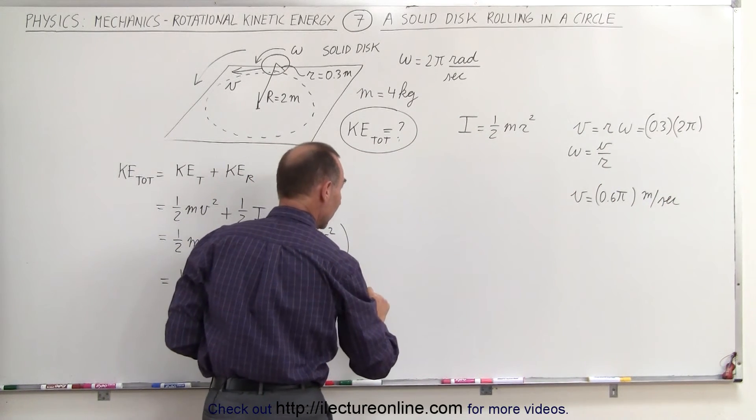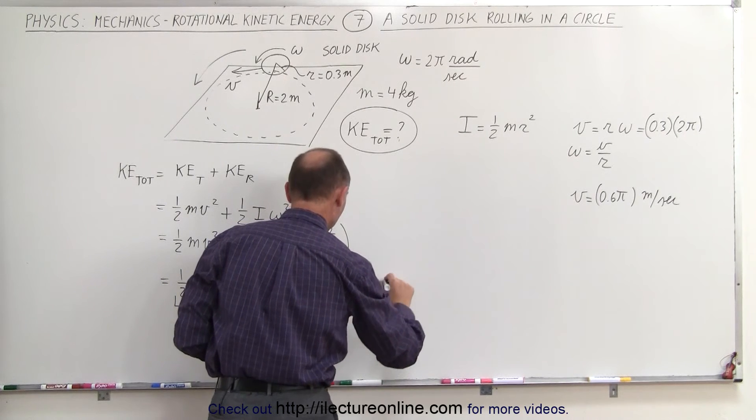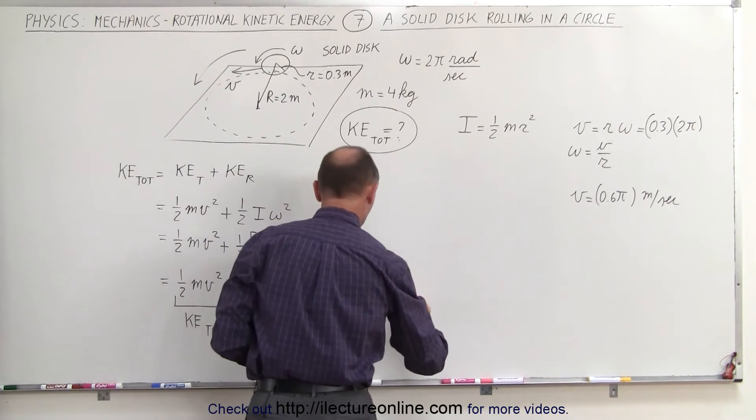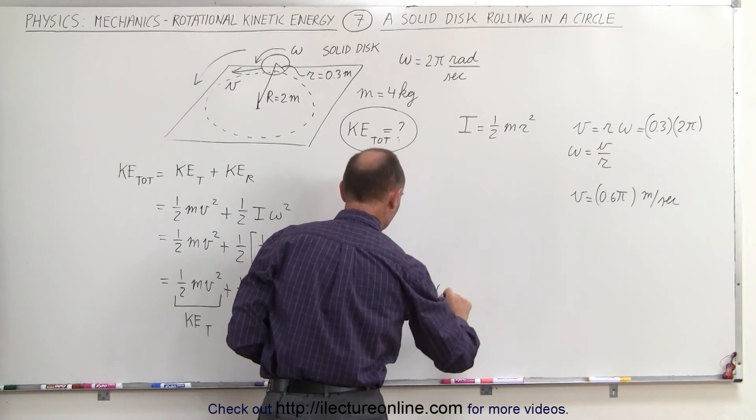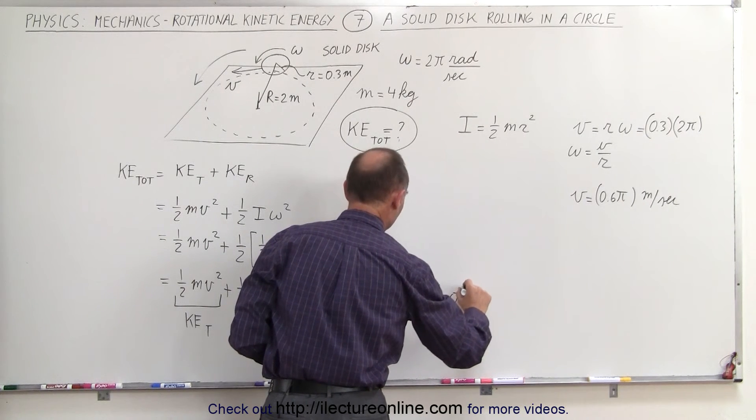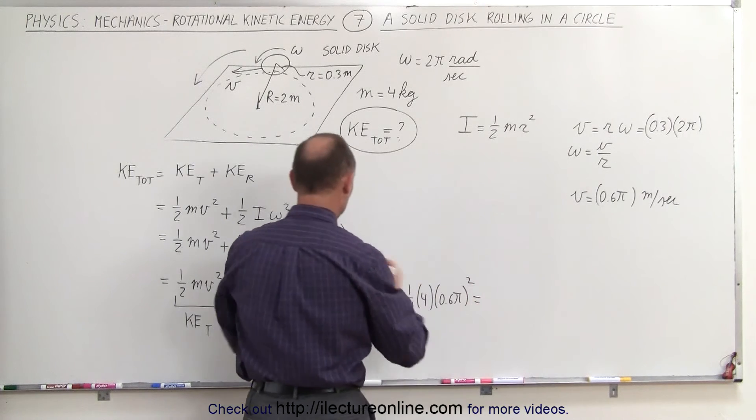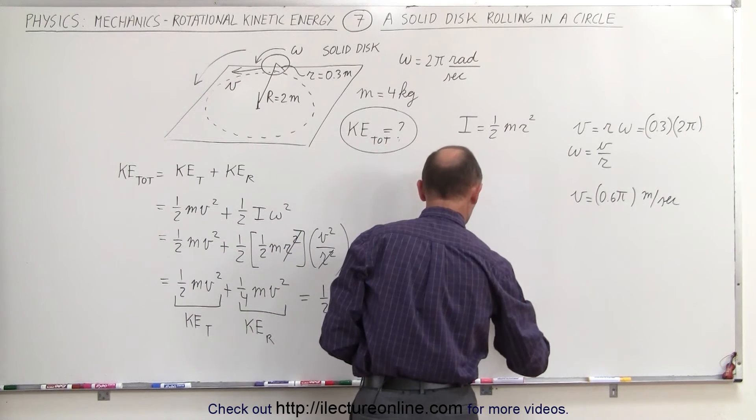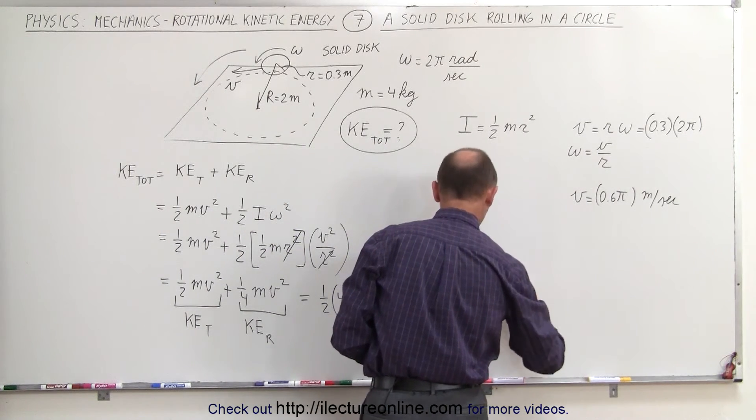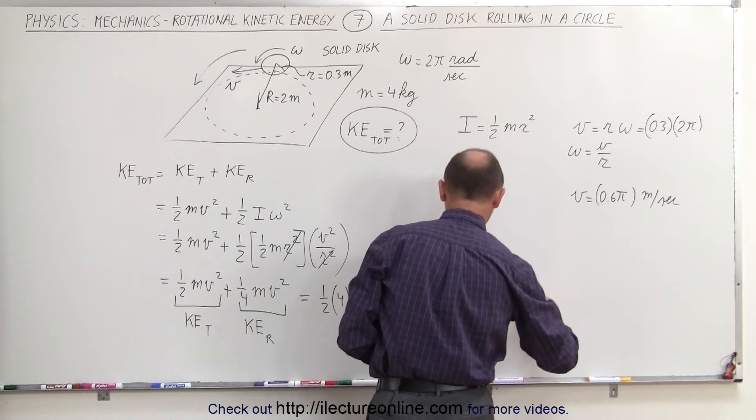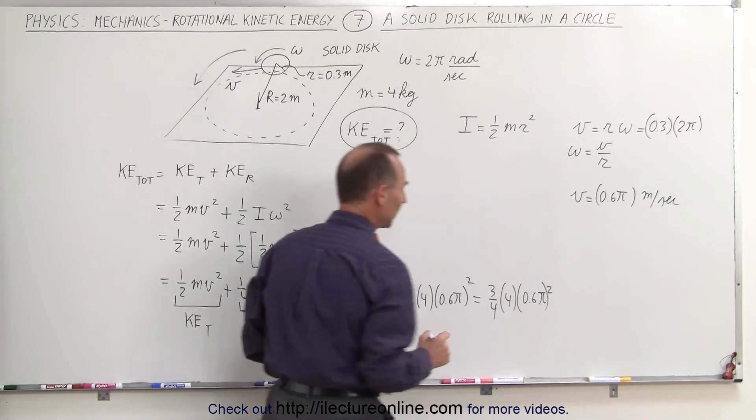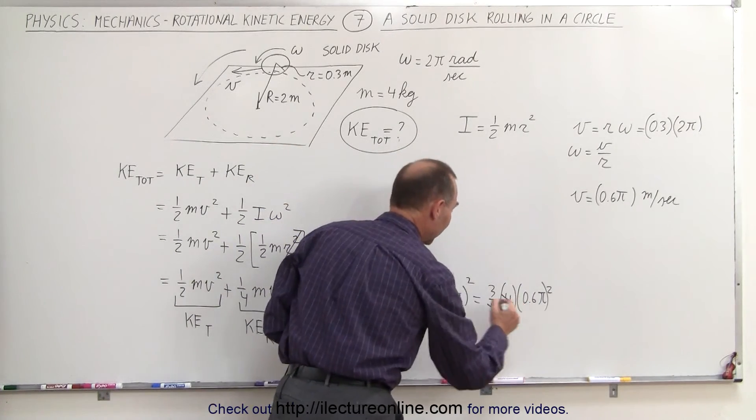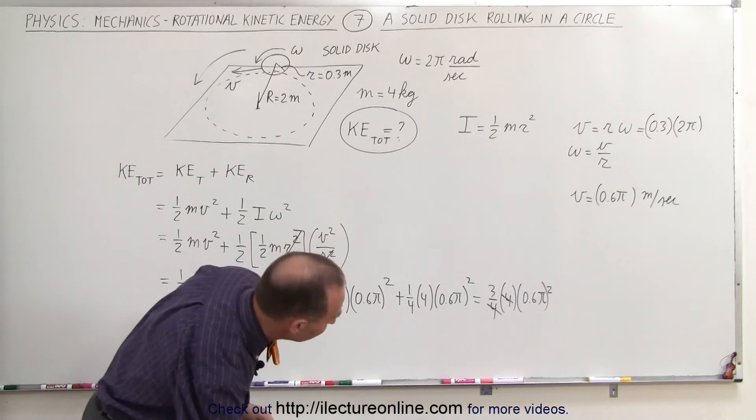That would be 0.6 times pi squared plus 1/4 times 4 times 0.6 pi quantity squared, which means when we combine it, this is really 3/4 times 4 times 0.6 pi squared, like so. And then of course you can see that the fours cancel out, and that makes it a little bit easier to calculate.